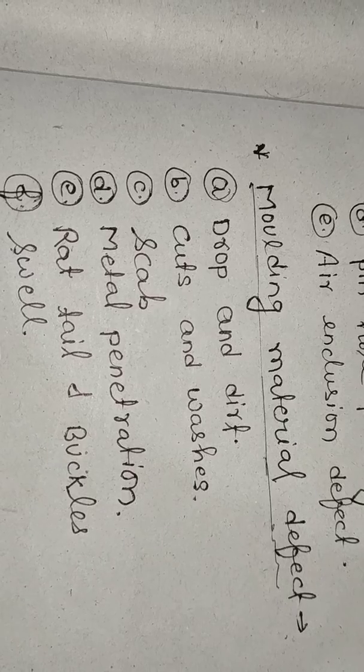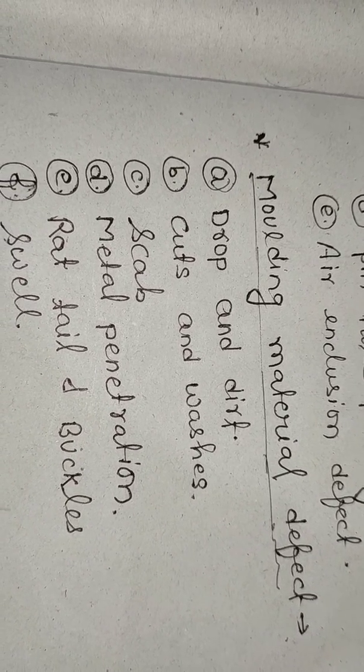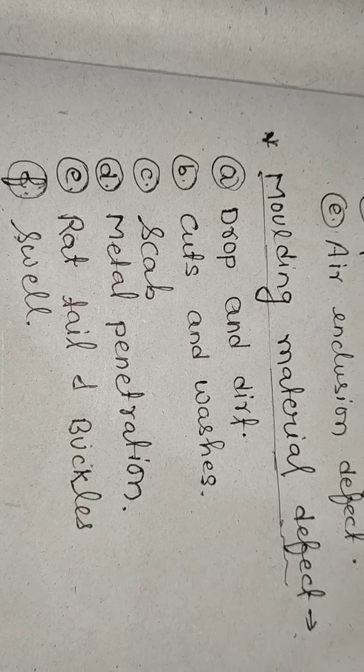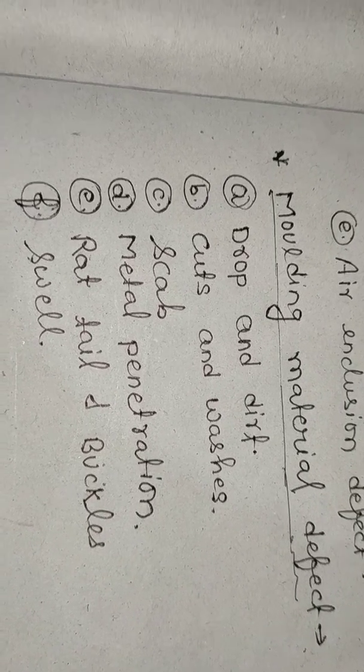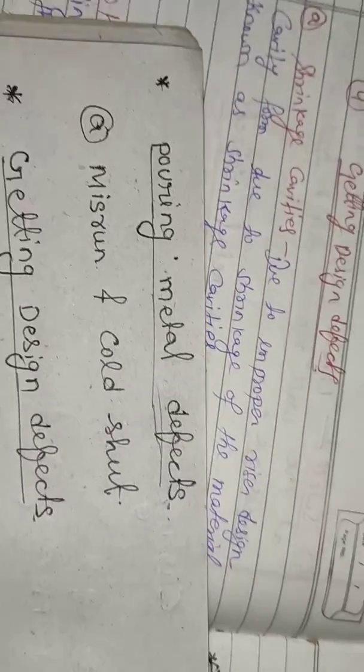Types of molding defects include: drop and dirt, cuts and washes, scab, metal penetration, rattail, buckles, and swell. The third type is pouring metal defect. In pouring metal defects, we generally study misrun and cold shut.